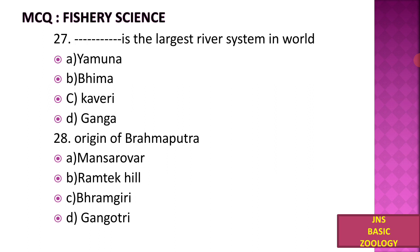Which is the largest river system in the world? A) Yamuna, B) Bhima, C) Kaveri, D) Ganga. The Ganga river is the largest river system in the world, with a length of about 8,047 kilometers.